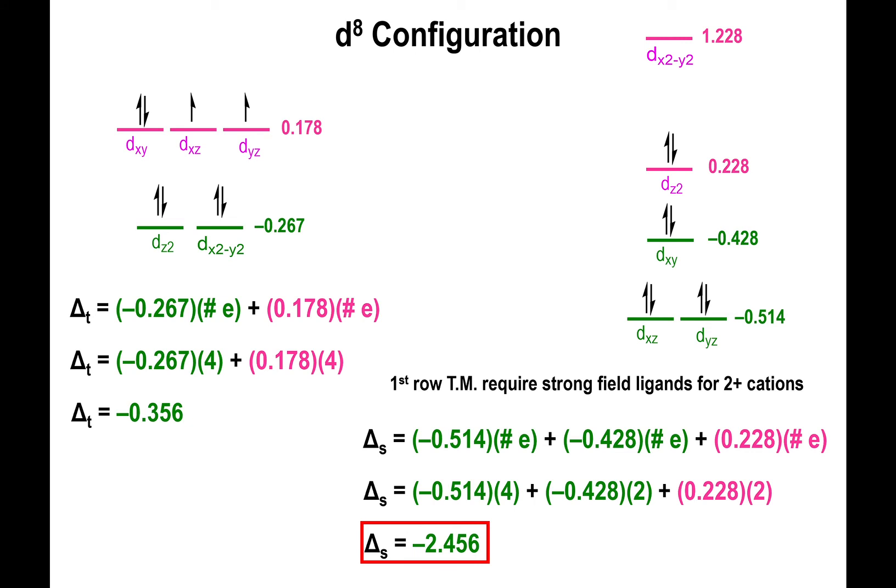This is telling you that the d8 configuration is vastly favored by the square planar configuration. In many cases, that's what will dictate whether you have a square planar complex or not. For first row transition metals, you're still required to have strong field ligands bound to your complex for the square planar configuration, especially if the charge is 2 plus. For second and third row transition elements, which favor low spin, they will favor the square planar arrangement.